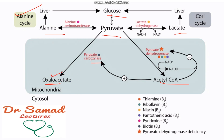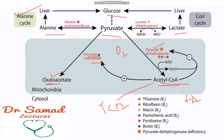If there is plenty of oxygen available, pyruvate can be converted into acetyl-CoA with the help of an enzyme pyruvate dehydrogenase complex. The acetyl-CoA can then be used for fatty acid synthesis or keto-acid metabolism.